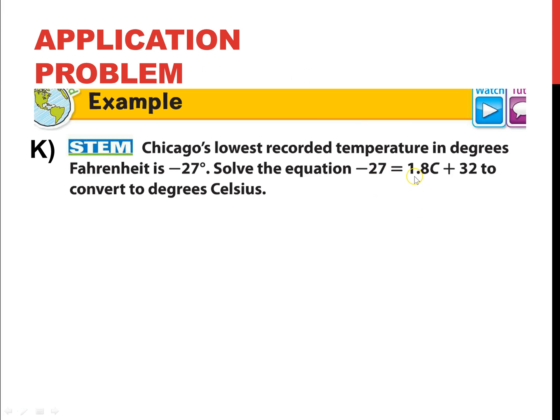They give you the equation. It's negative 27 is equal to 1.8 times c plus 32, or negative 27 equals 1 and 8 tenths times c plus 32 to convert the degree into degrees Celsius. So I'm going to use the equation. Circle the side with the variable. I'm adding 32. So the inverse of addition is subtraction.